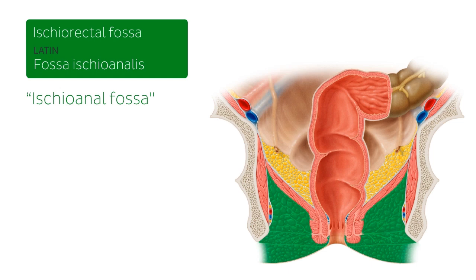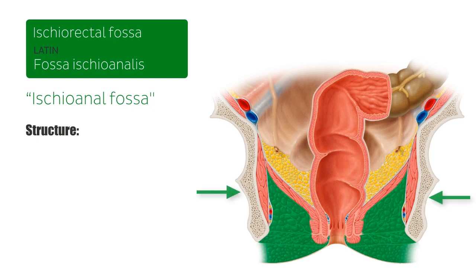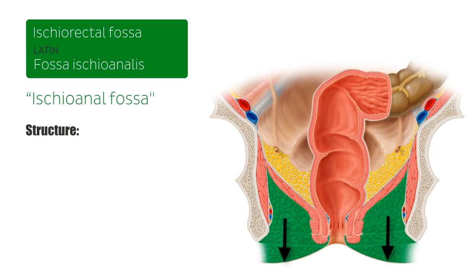Let's have a brief chat about the structure of the ischiorectal fossae. As the ischiorectal fossae are shaped somewhat like prisms, they therefore have a few aspects to them which are rather prismatic, namely the apex, the roof, the lateral walls, the medial walls, and the floor.